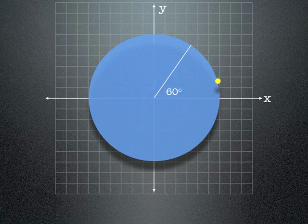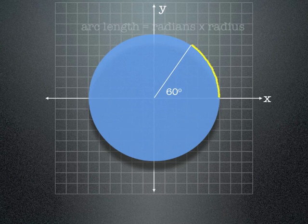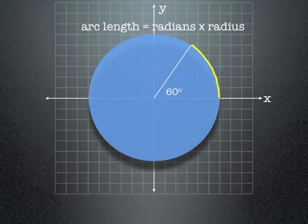Finally, we're getting back to the original question, which is the arc length of that yellow line at 60 degrees. We know that arc length is equal to radians times radius, or s.